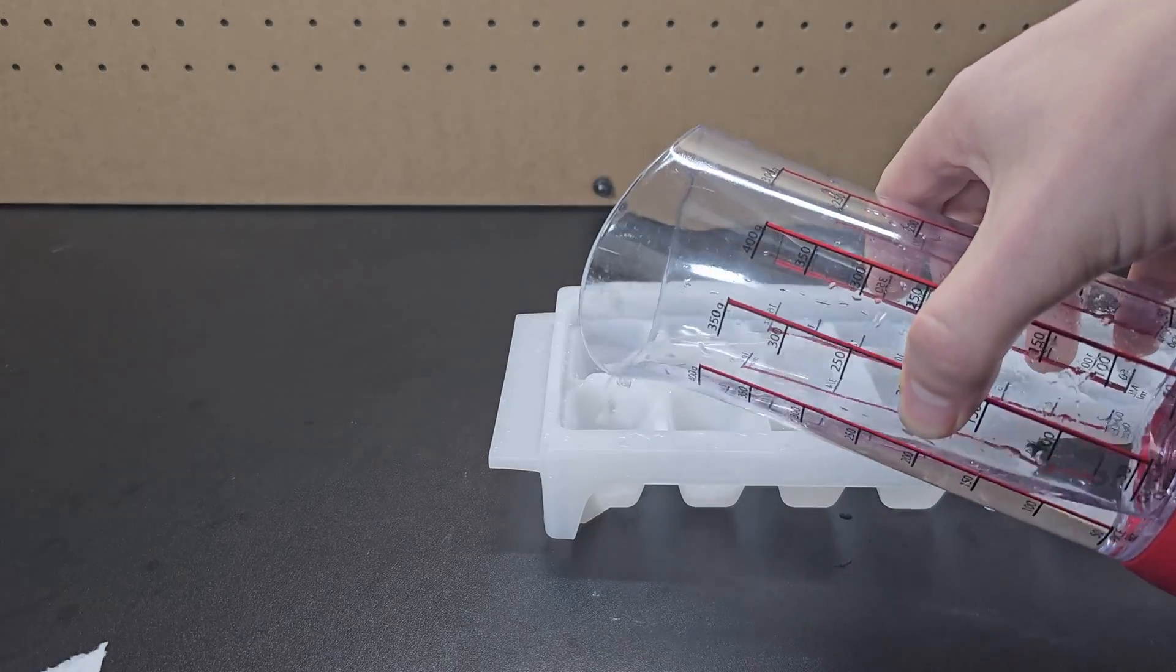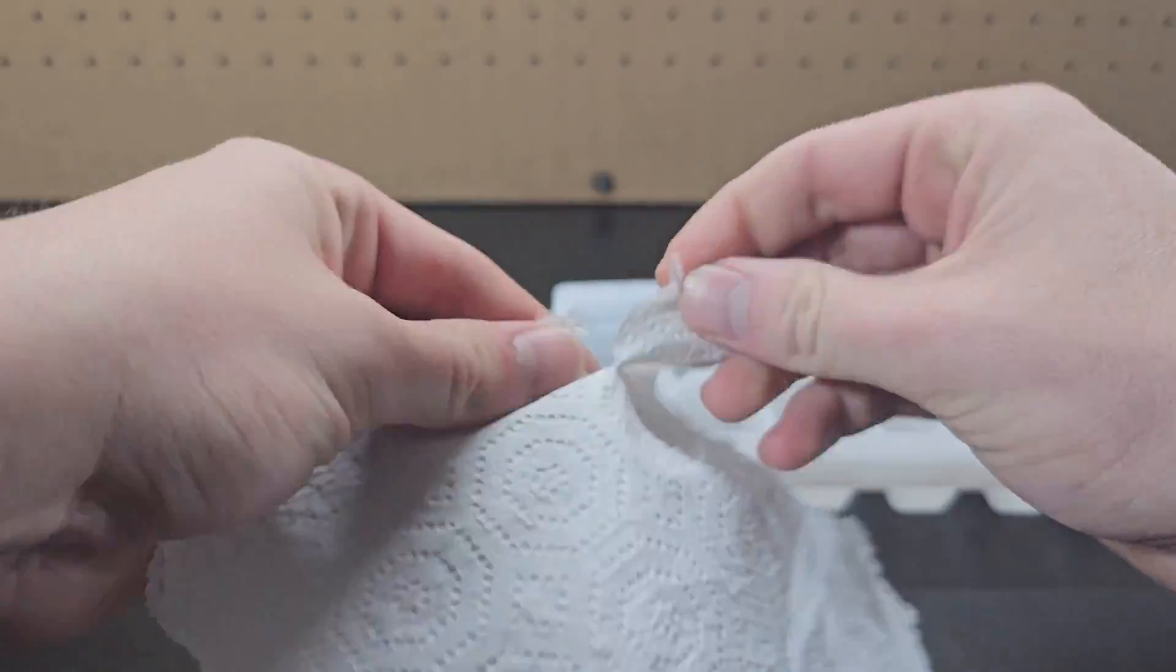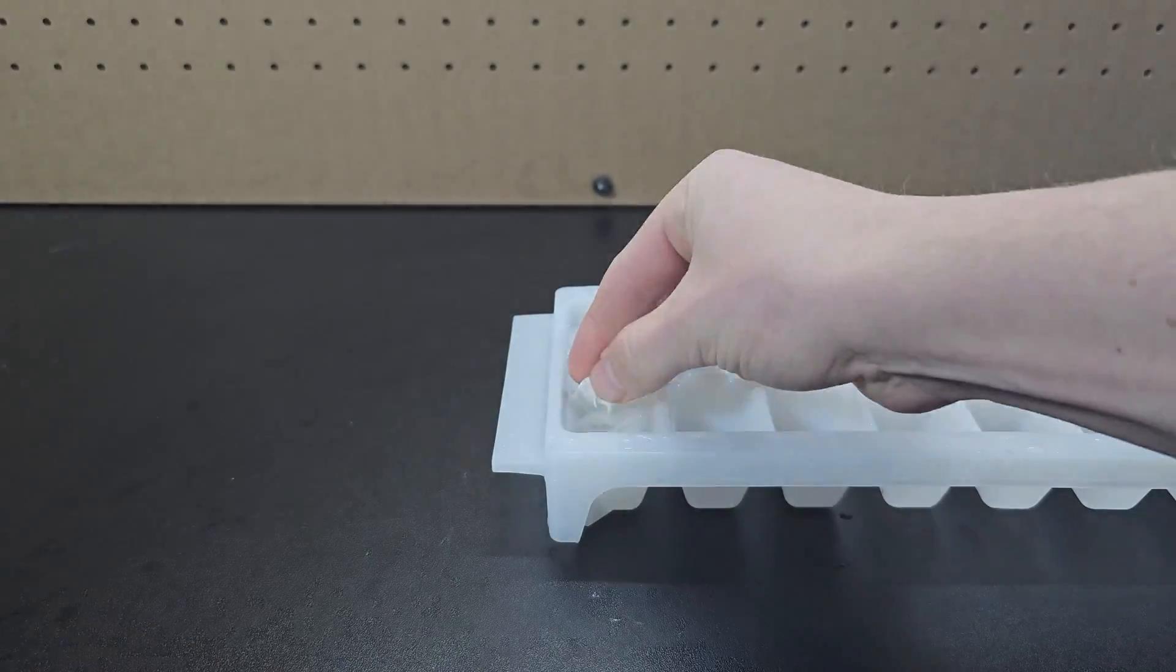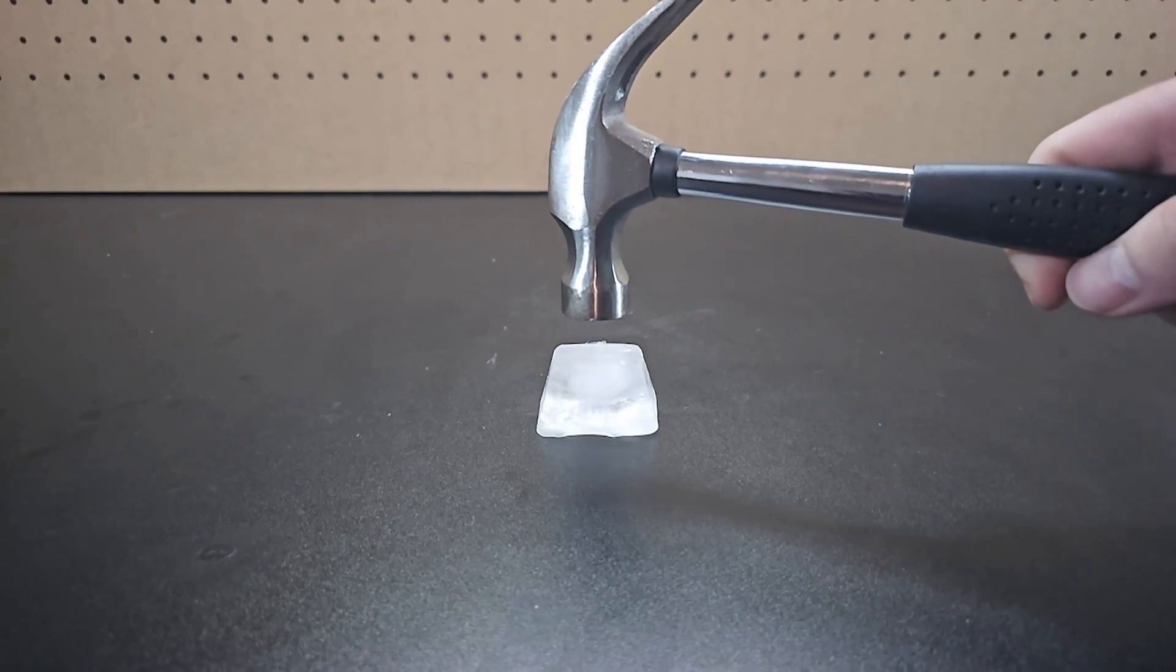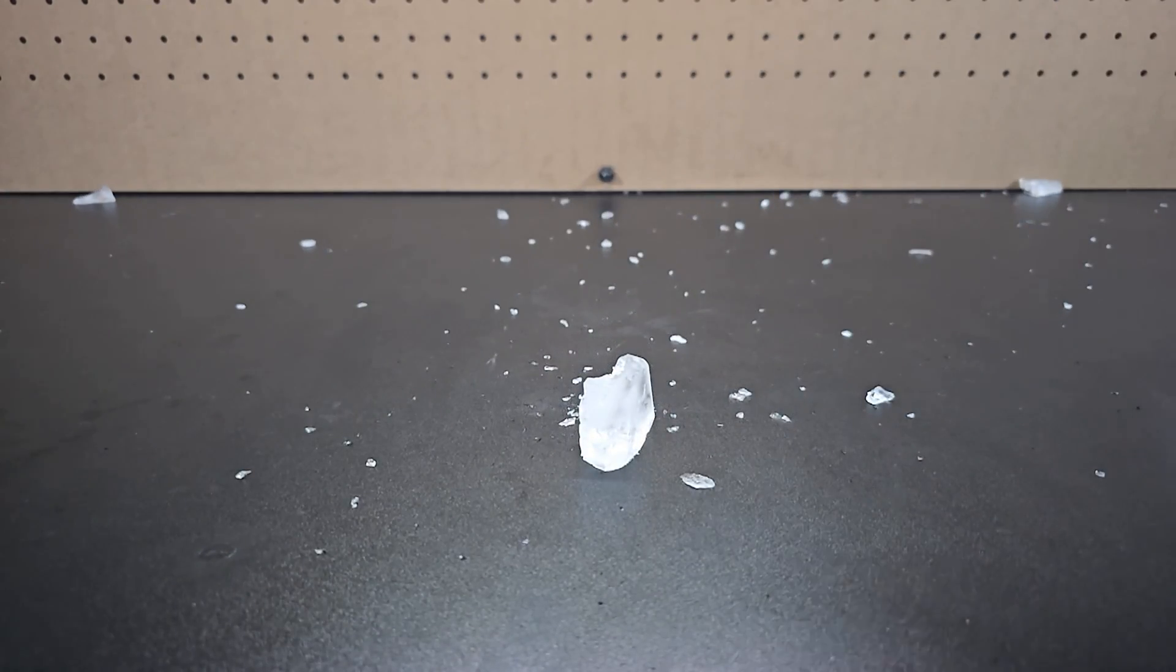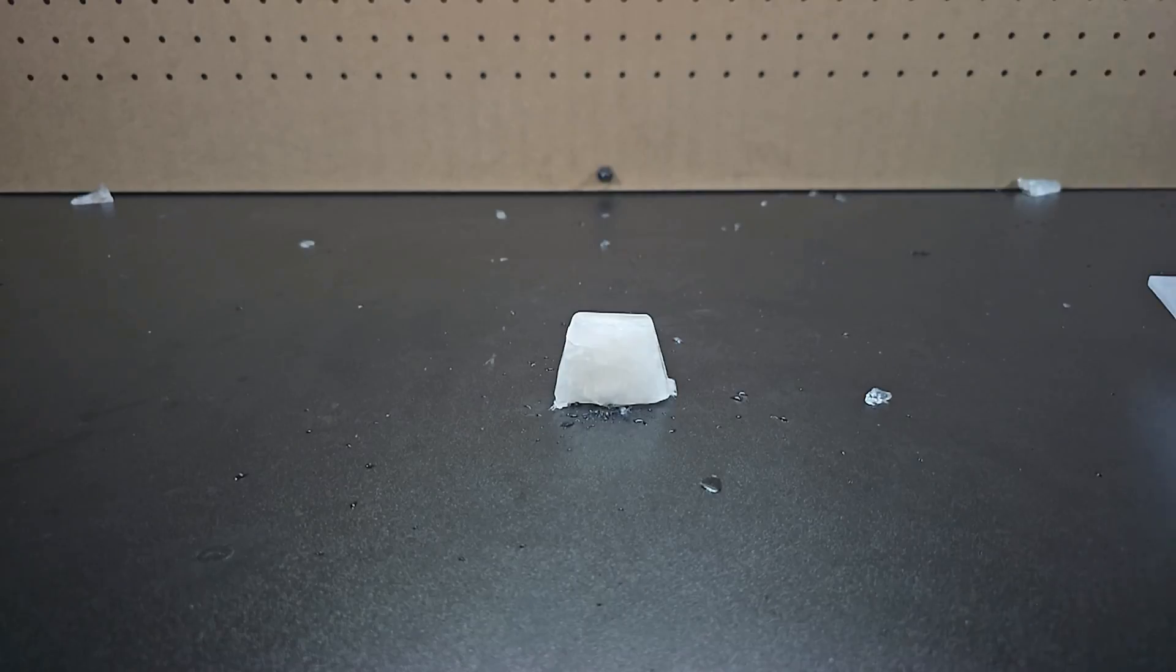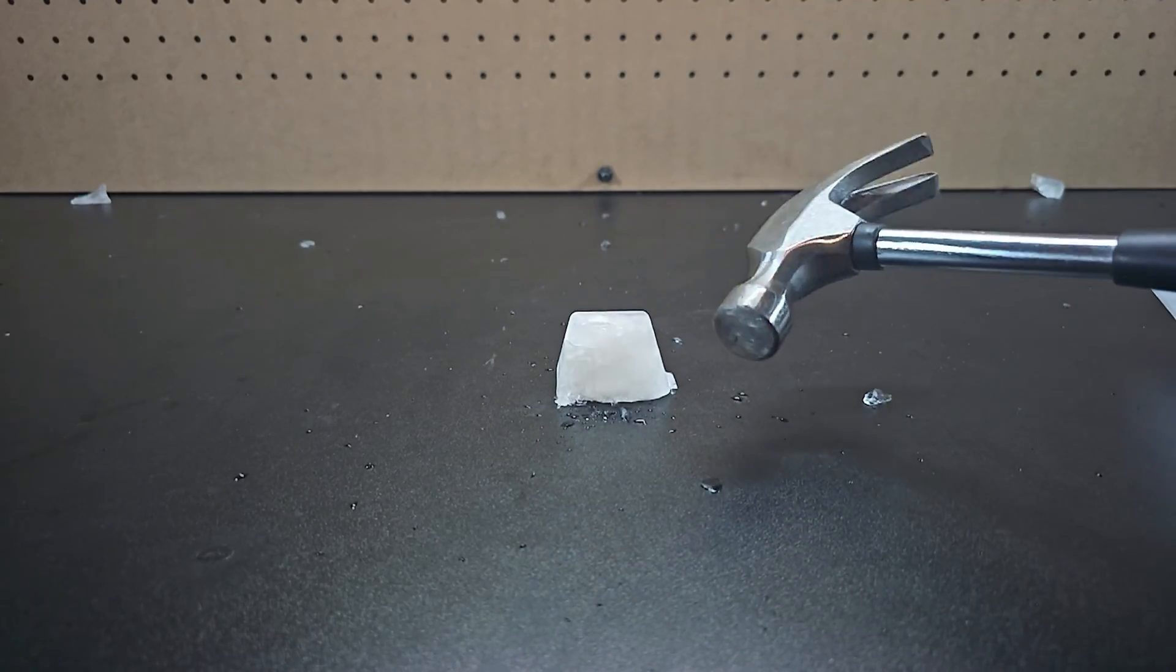Take an empty ice cube tray and fill two cubes up with tap water. Then add several strips of paper towel to one of them and put them in the freezer. When hit with a hammer, the regular ice cube shatters into a bunch of different pieces. However, the ice cube with strips of paper towel will stay almost entirely intact.